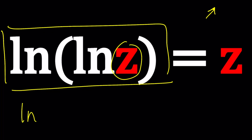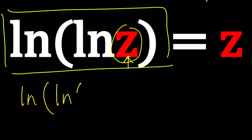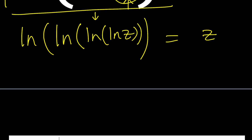So if you replace the z inside by the whole thing on the left-hand side — replace z with ln of ln z — and match the parentheses, make sure they're all matched up, this is going to equal z again. Nothing changed on the right-hand side, I just substituted it. And we can continue to do it. Since z is equal to ln of ln z, you can go ahead and replace this z with that again.